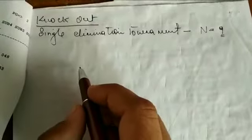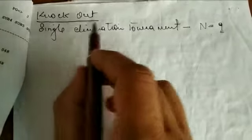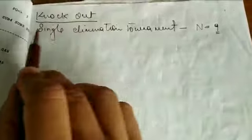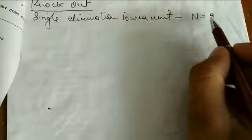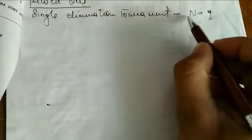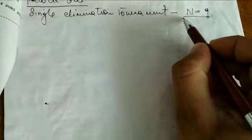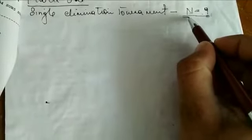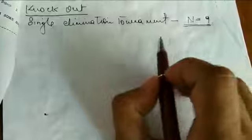Knockout Tournament Fixture — Single Elimination Tournament where the total number of N is 9, meaning the total number of teams is 9. So 9 teams have participated in the tournament. Let's start now.